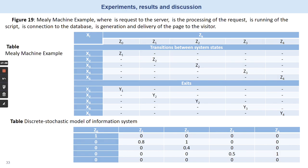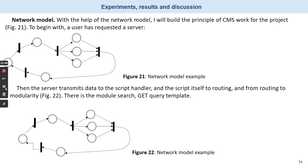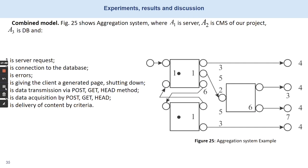This slide shows a Mealy machine example, where the states are: request to the server, processing of the request, running the script, connection to the database, and narration on delivery to the page of the visitor. Here you can see a network model example, and in this slide an aggregation system example.